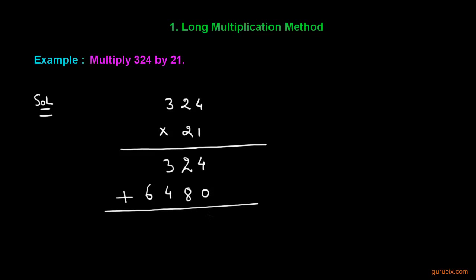Adding: 4 plus 0 is 4; 2 plus 8 is 10 — we write 0 here and carry 1; 1 plus 3 is 4; 4 plus 4 is 8; and 6 here. So this is the multiplication of 324 and 21.